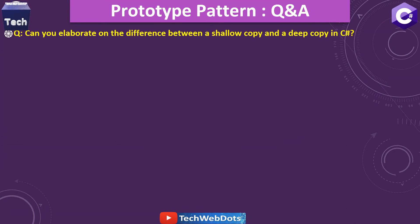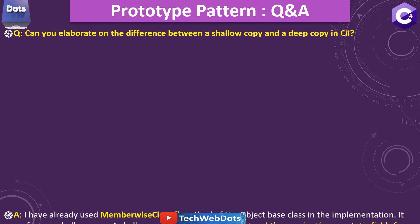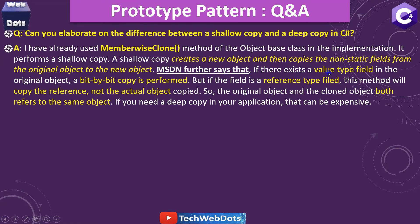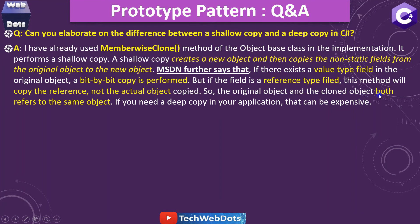A very important question is the difference between shallow copy and deep copy. You already saw I used MemberwiseClone from the object base class, which performs a shallow copy. Shallow copy creates a new object and copies non-static fields from the original object. According to MSDN, if there is a value type field, a bit-by-bit copy is performed, but if the field is a reference type, it copies the reference, not the actual object. So the original object and the clone both refer to the same reference-type objects. If you need a deep copy, it can be expensive.